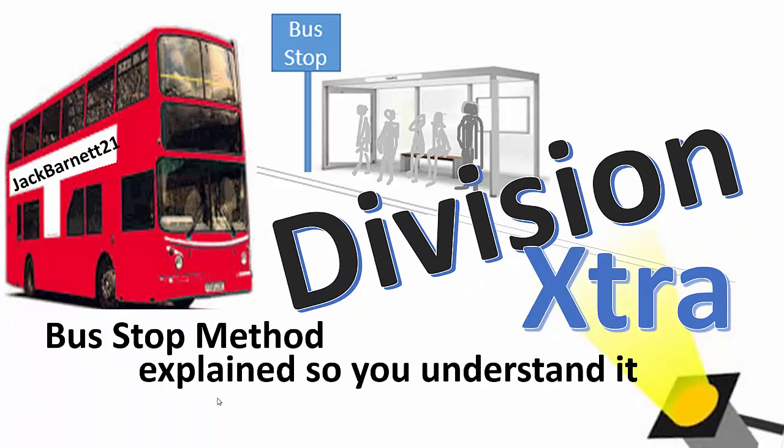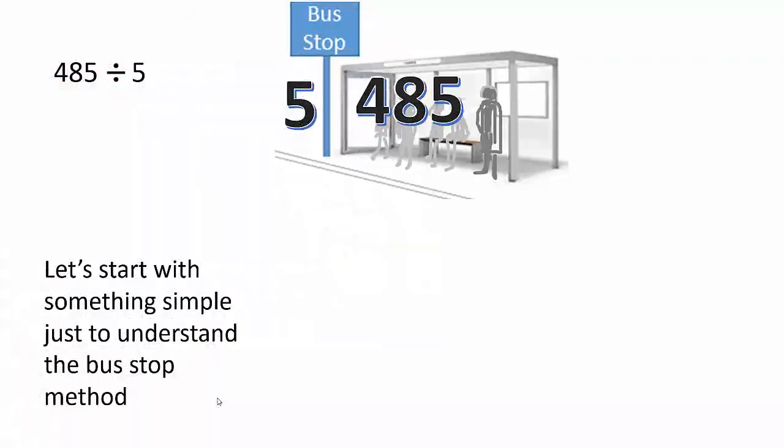Division, extra bus stop method explained so you understand it. Let's start with something simple just to understand the bus stop method. 485 divided by 5. Here it is up here. But here's the method we're going to use.